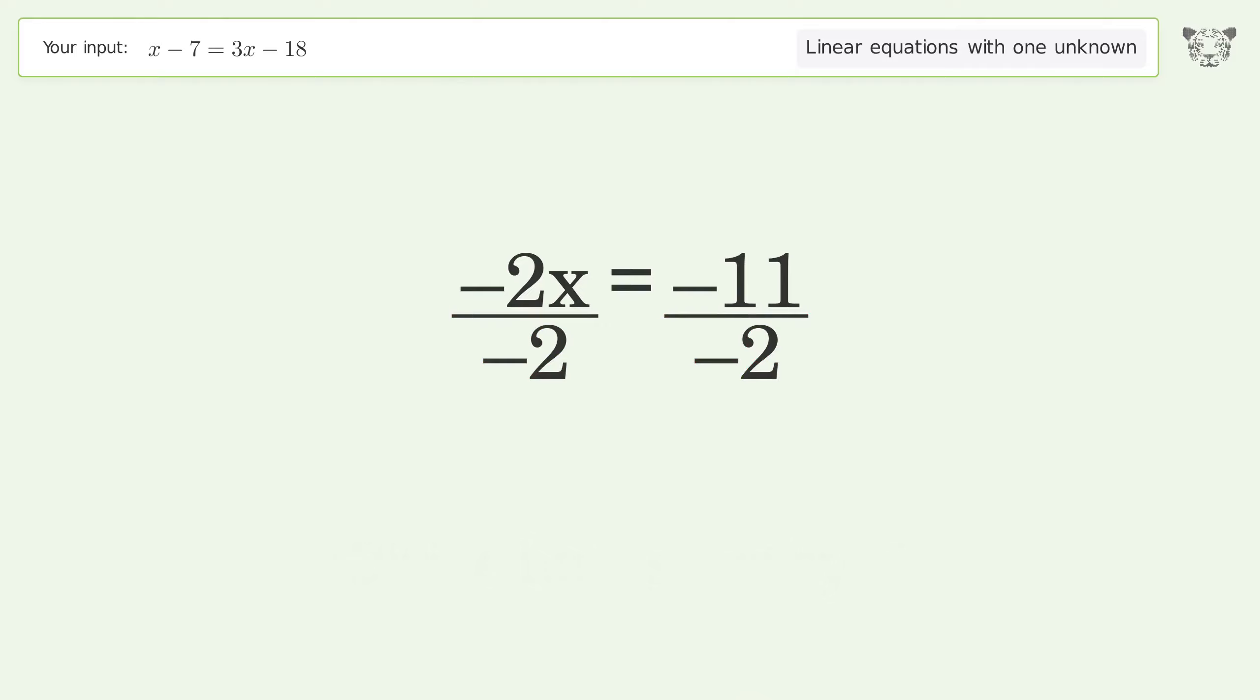Isolate the x. Divide both sides by negative 2. Cancel out the negatives.